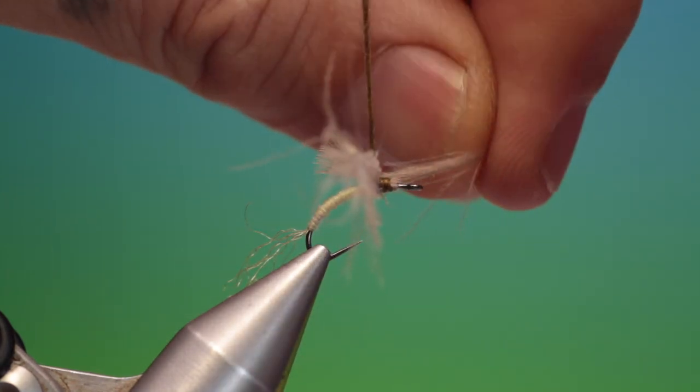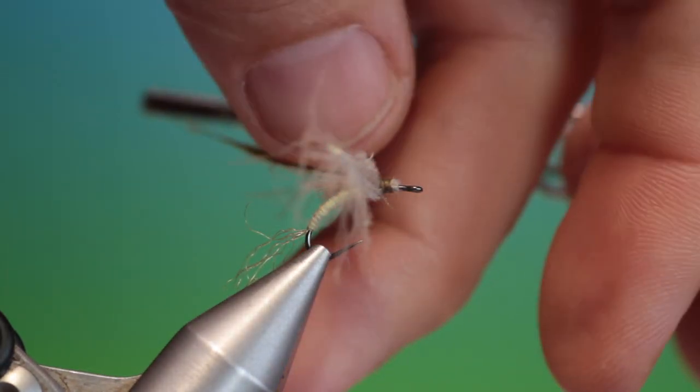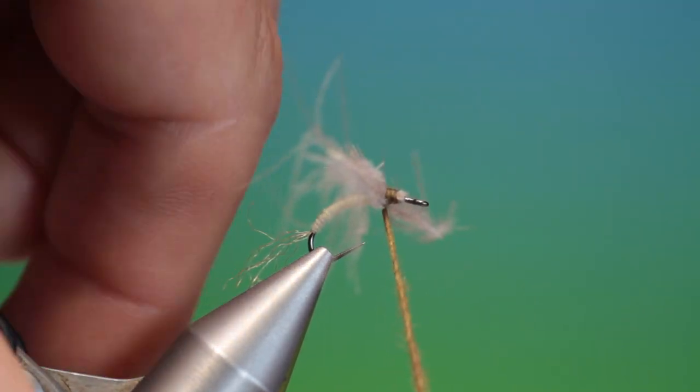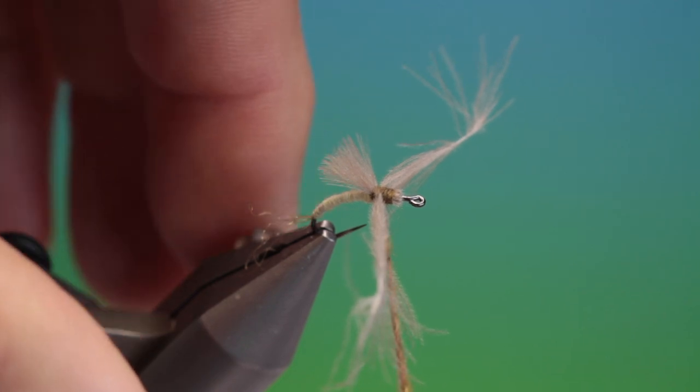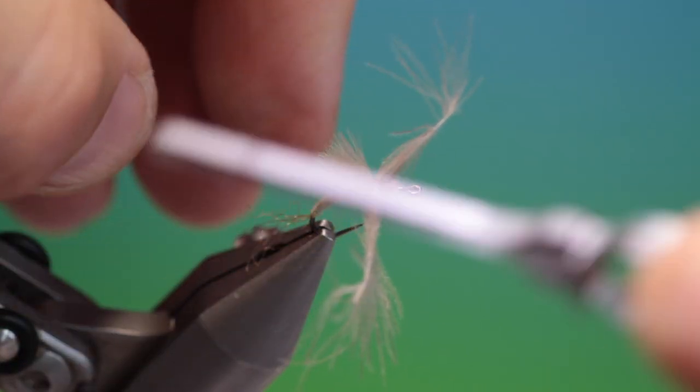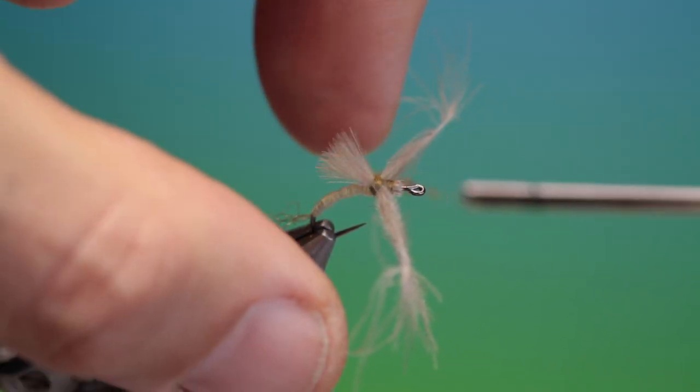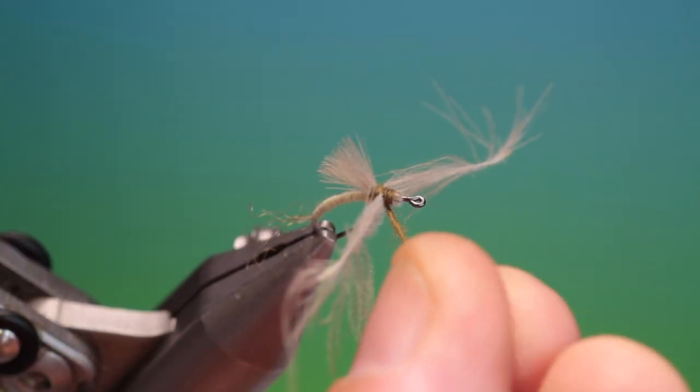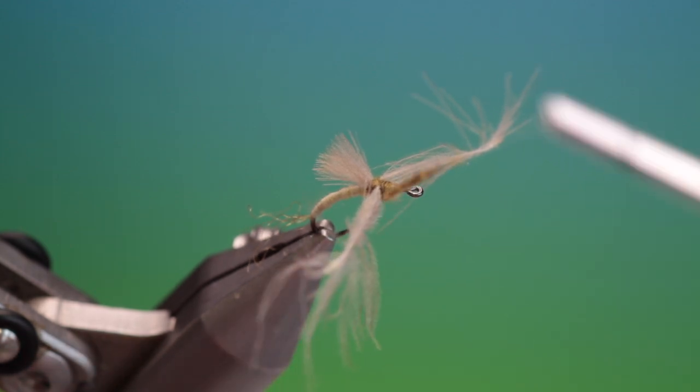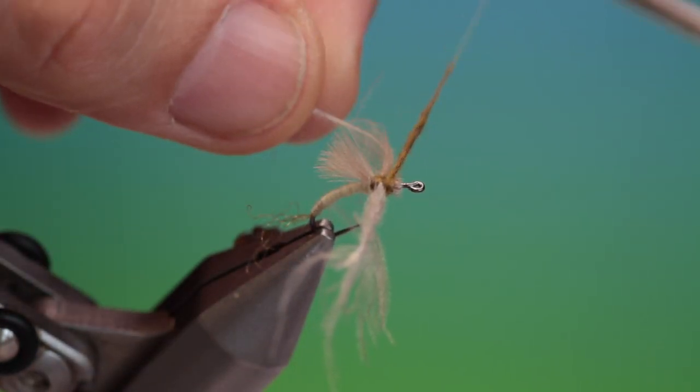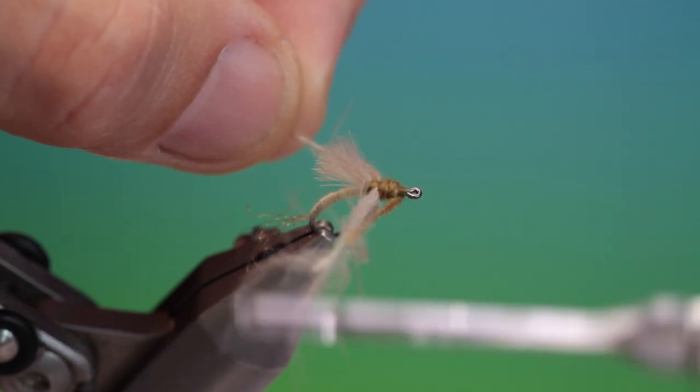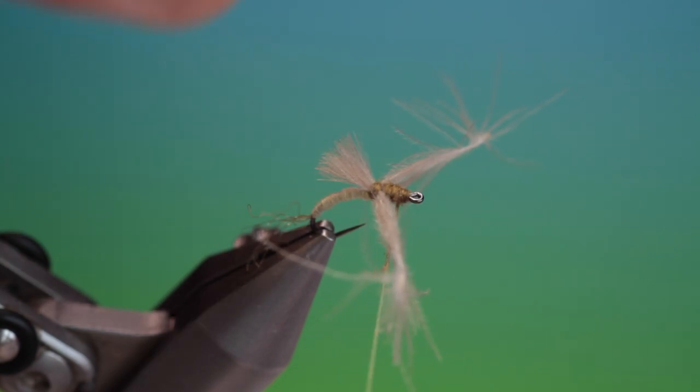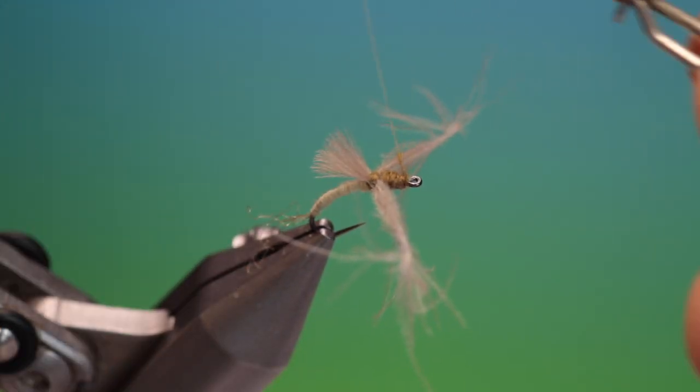And we go around there. And we pull that one forward. So they both stick out. Go once more there. So they're pointing a little bit more forward. There we are. Tighten up my dubbing again. And then finish off there.